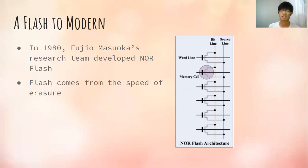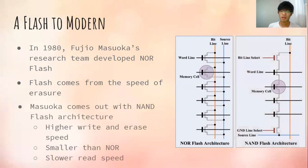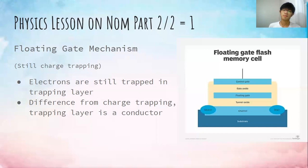However, NAND flash comes with a slower read speed. Flash memory is based on a floating gate mechanism, which is still charge trapping. The only difference from MNOS charge trapping is that the trapping layer is actually a conductor, and as a result it wears out faster, which becomes a disadvantage.